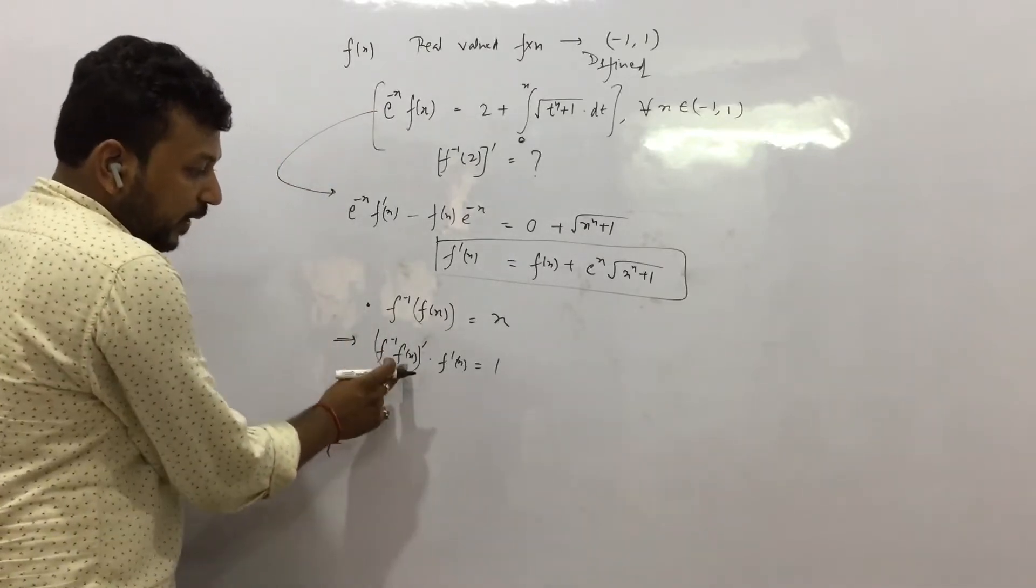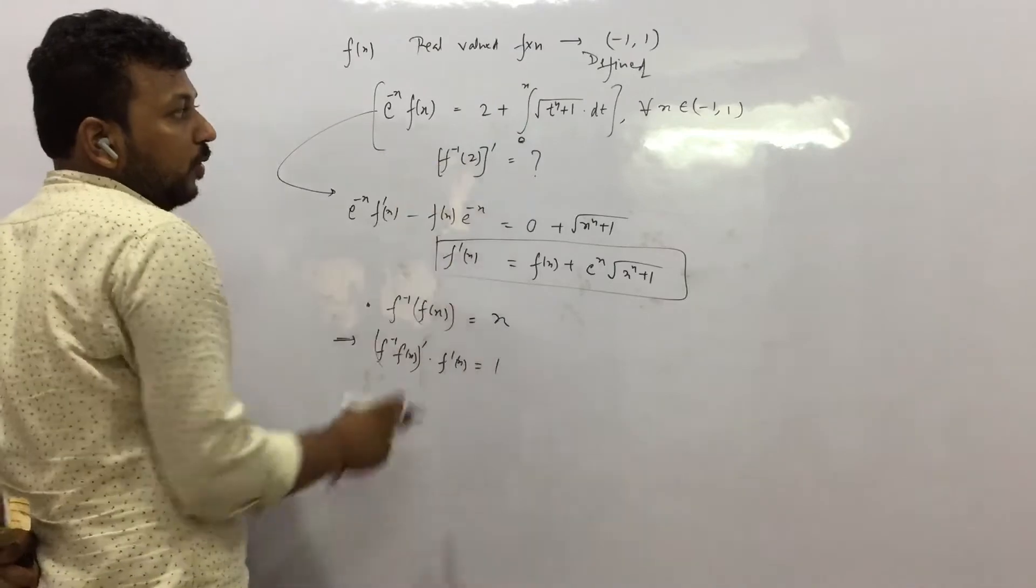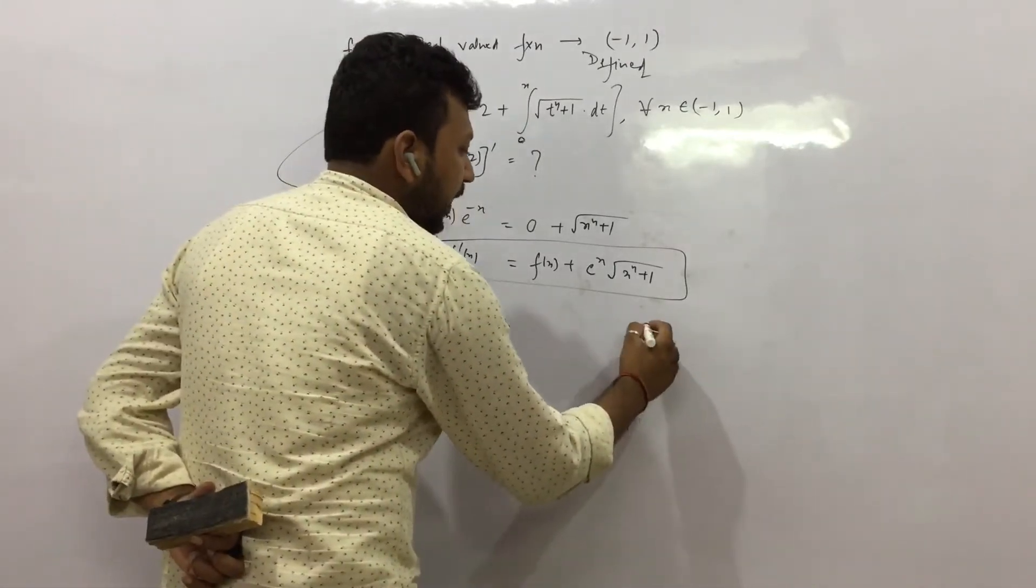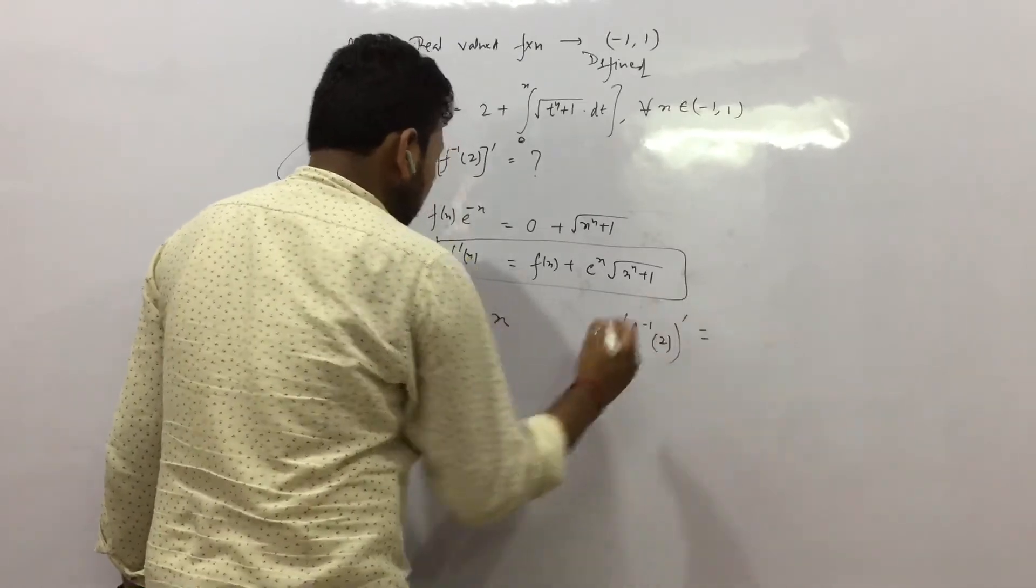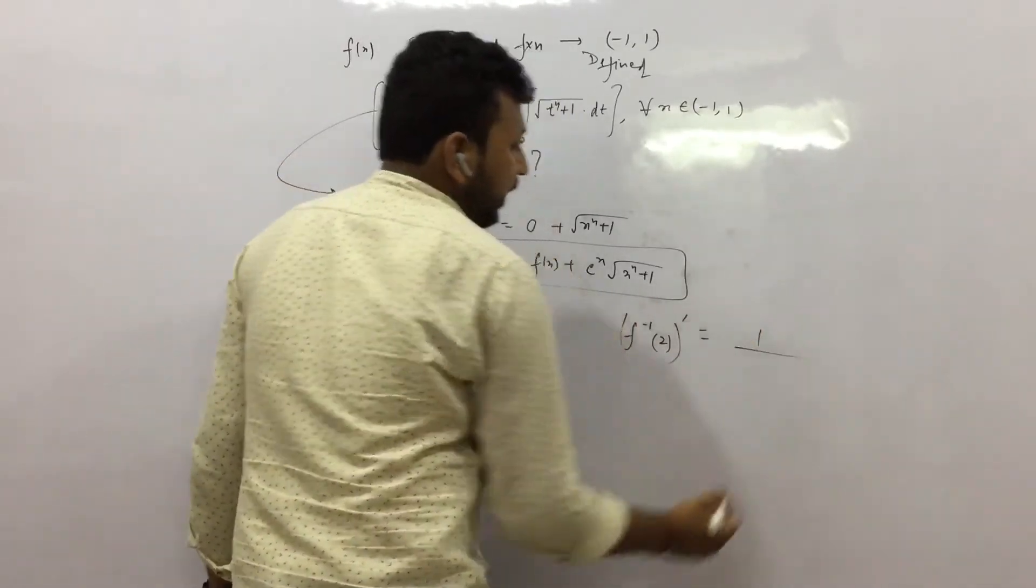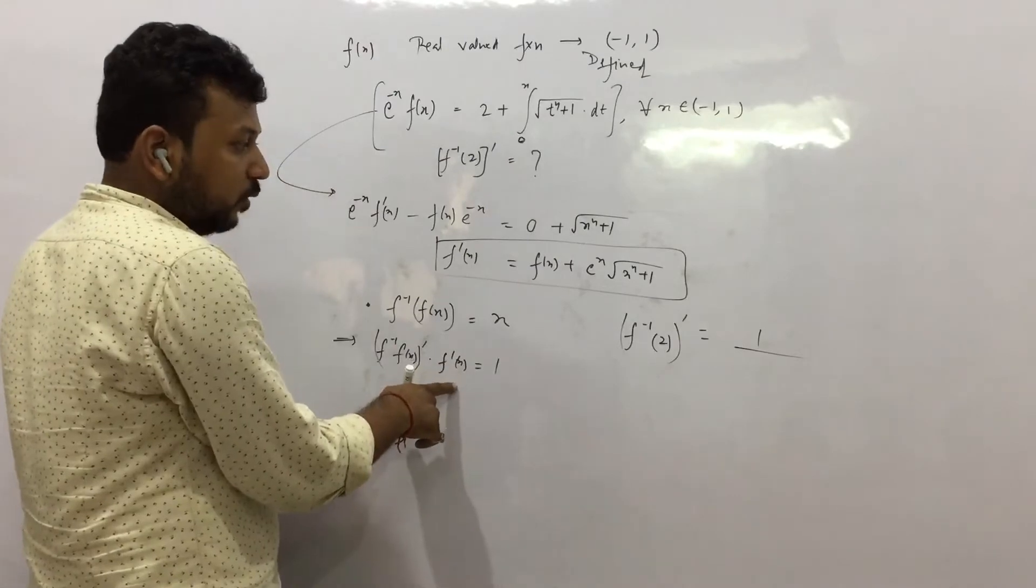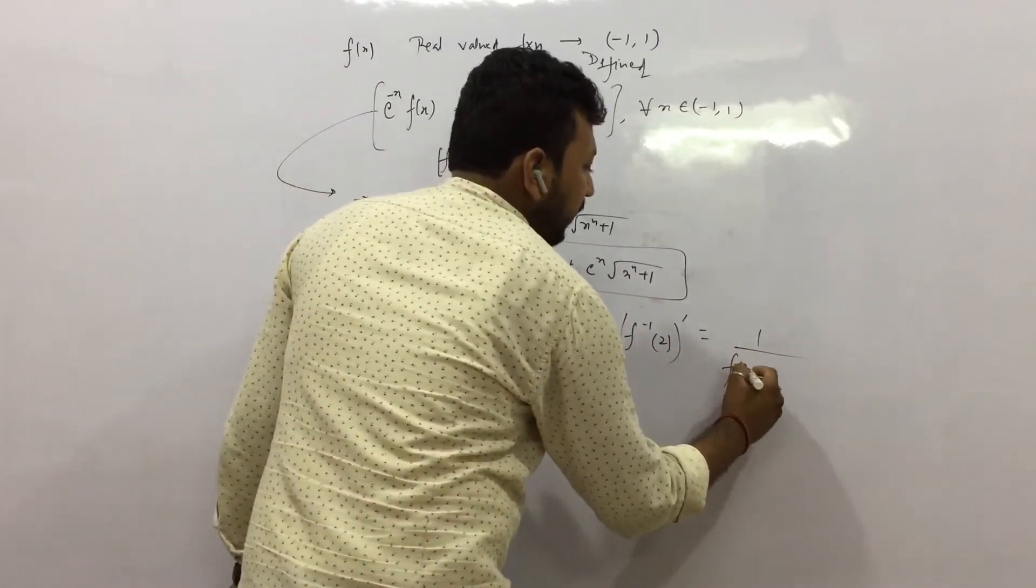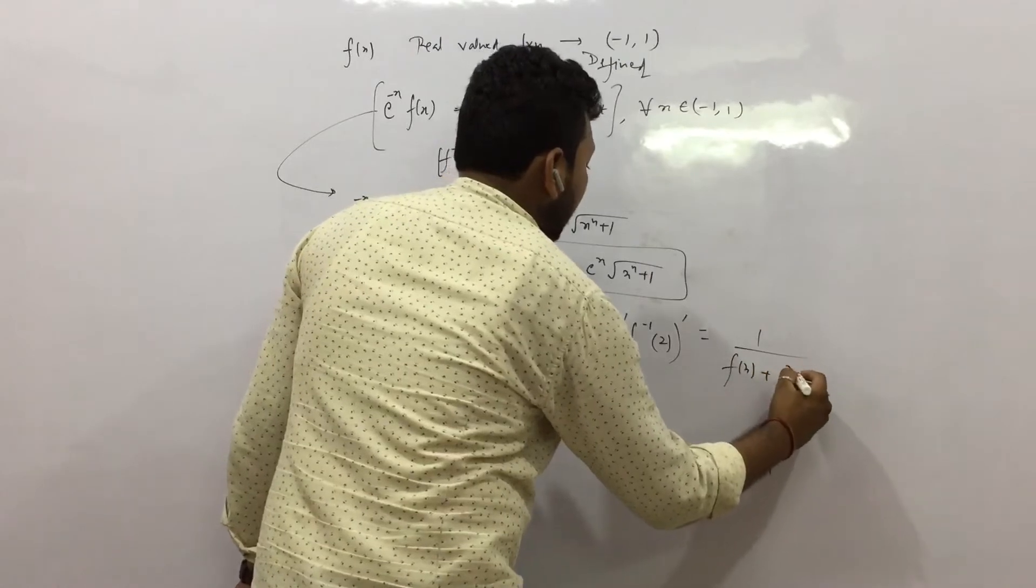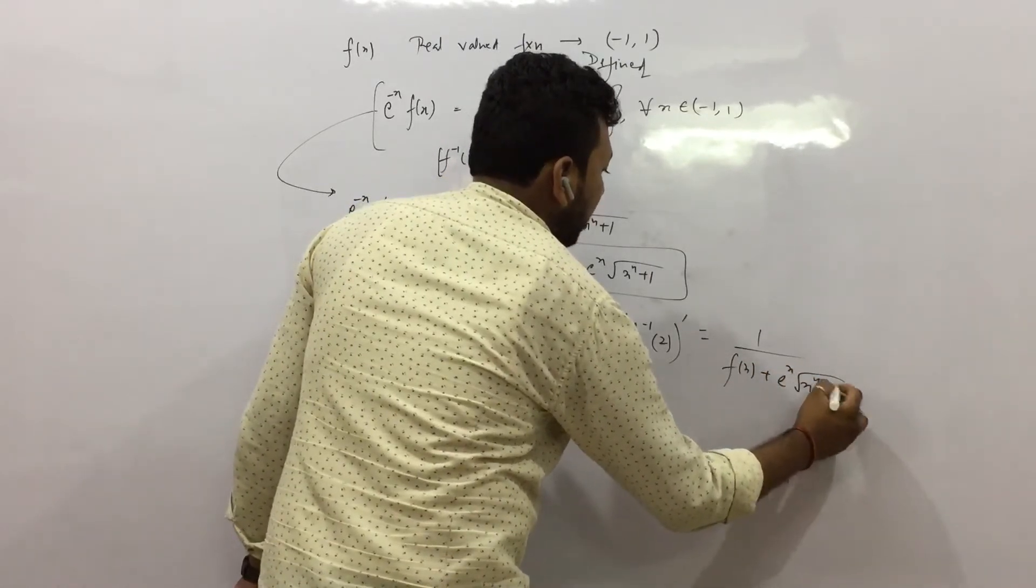Now using this, if I put f(x) equal to 2, we can get the answer. We can write f inverse of 2 dash, that is 1 by f dash x at x equal to 2. f dash x is the complete expression, that means f(x) plus e to the power x times x to the power 4 plus 1.